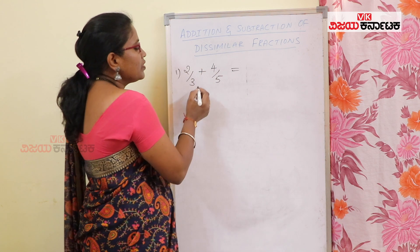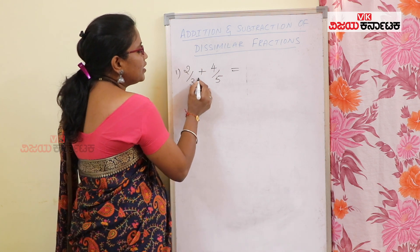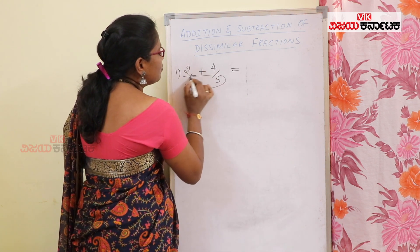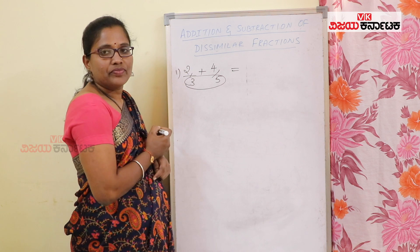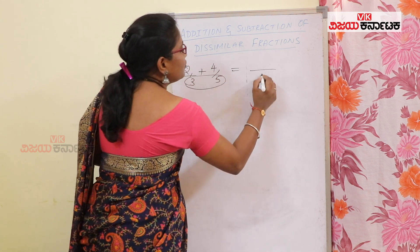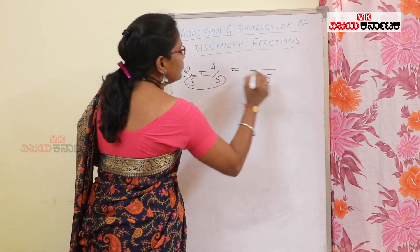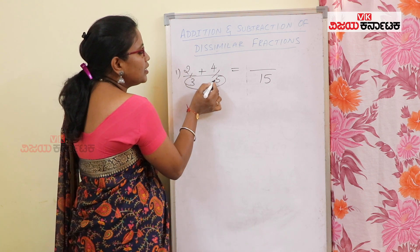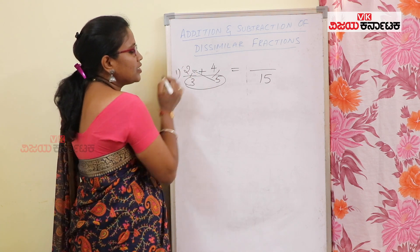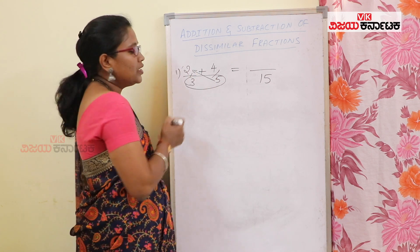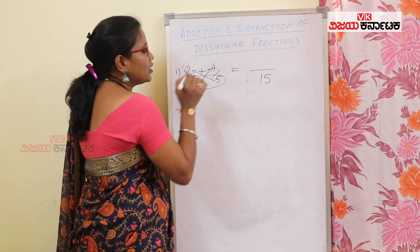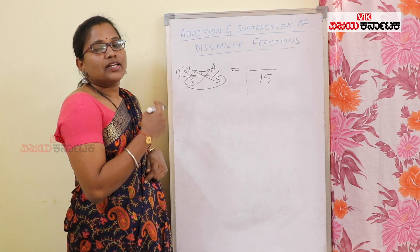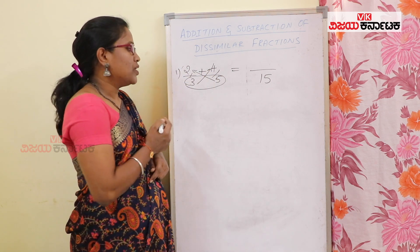Additionally, we will multiply the denominators together. So, 3 into 5 is 15. We will multiply the same denominator to get the common denominator for both fractions.